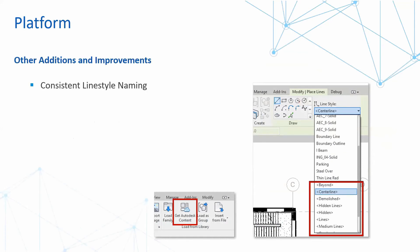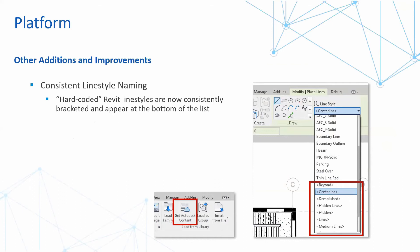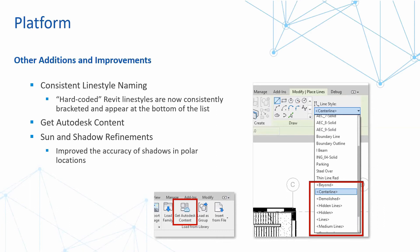Other changes include consistent line style names — hard-coded Revit line styles are now consistent in brackets and appear at the bottom of your list, similar to how preset line styles work in AutoCAD. You can also get Autodesk content directly from the Insert tab by selecting 'Get Autodesk Content' and downloading live Autodesk content available within your region. Additional changes include sun and shadow refinements, improving accuracy of shadows in polar locations, and sunrise and sunset times are now updated with project location for those using heating and cooling loads.